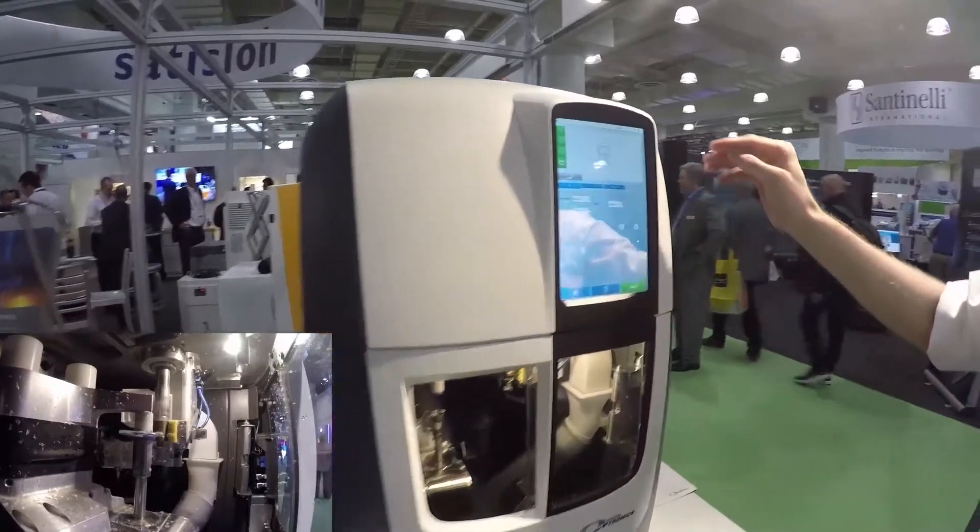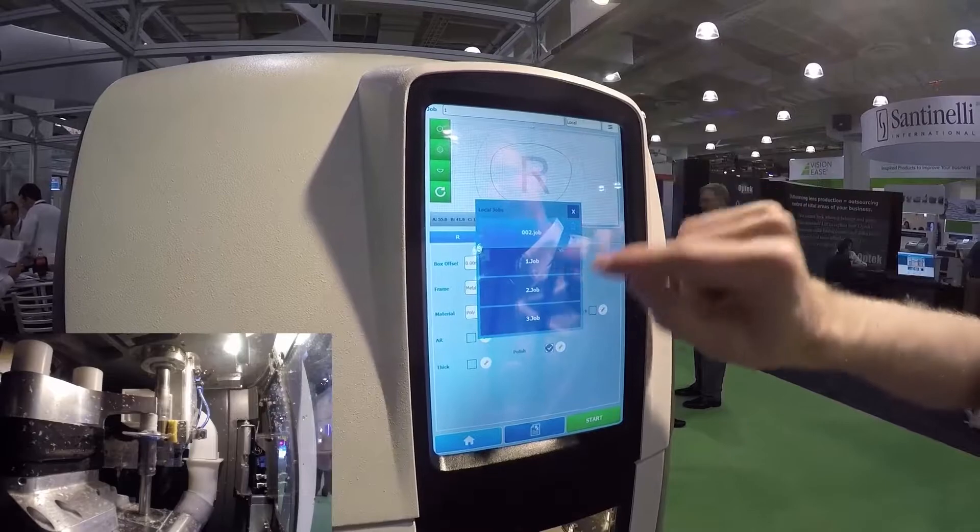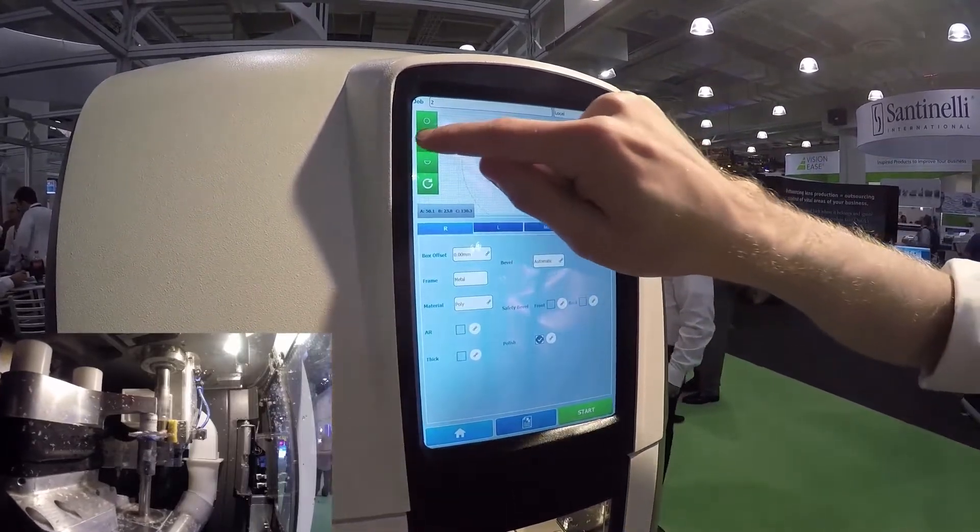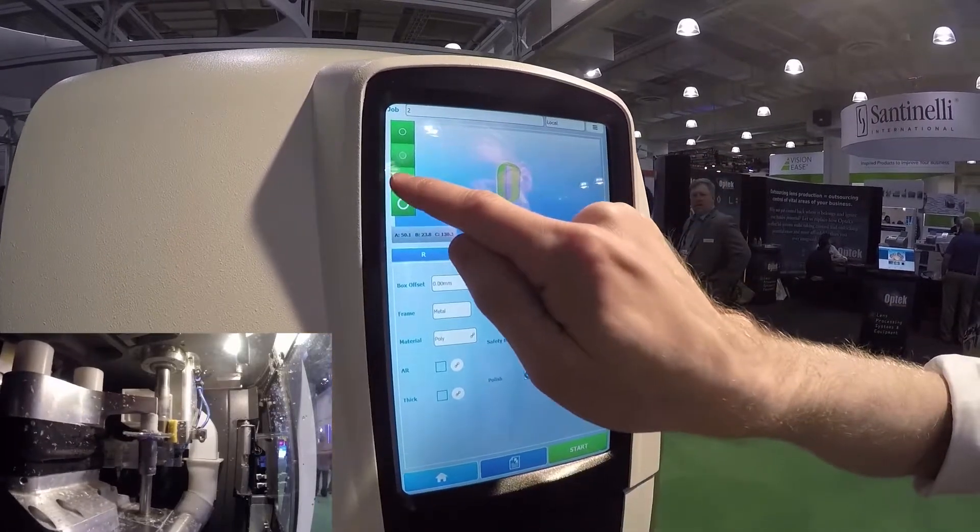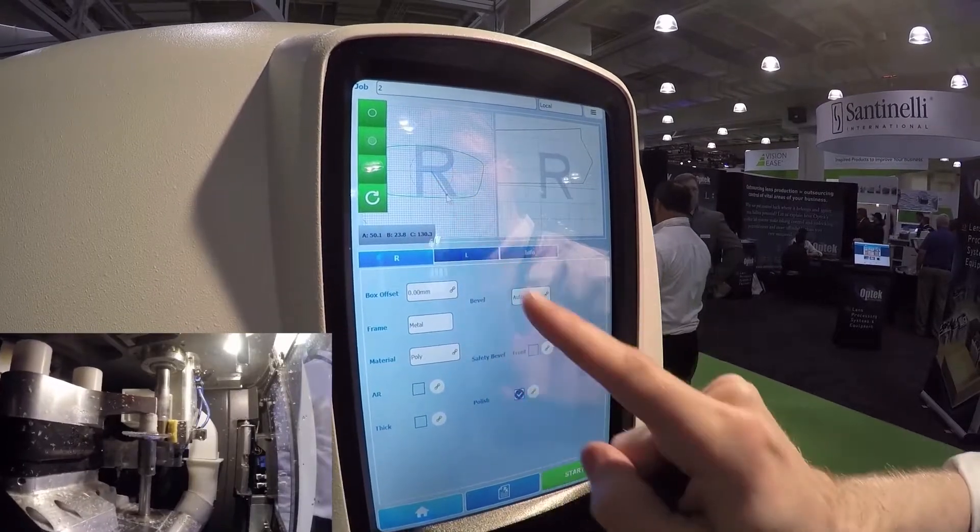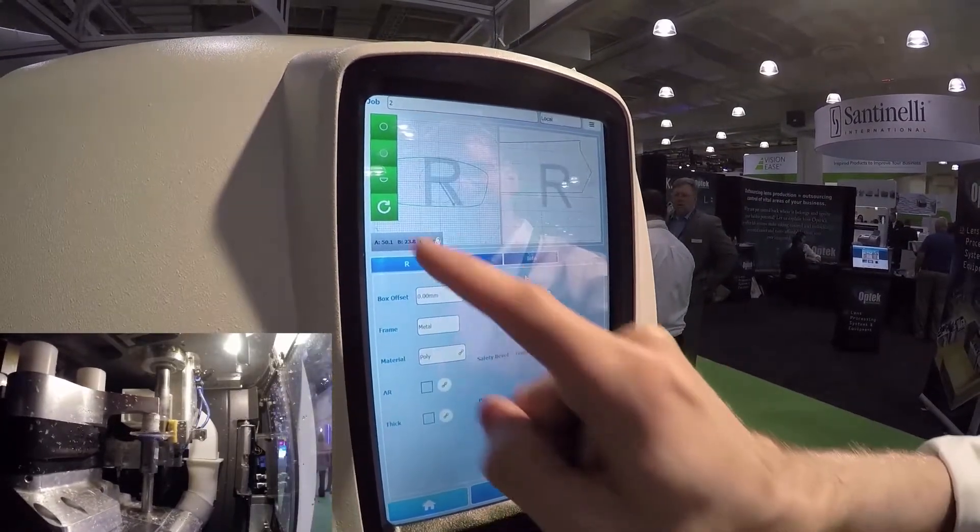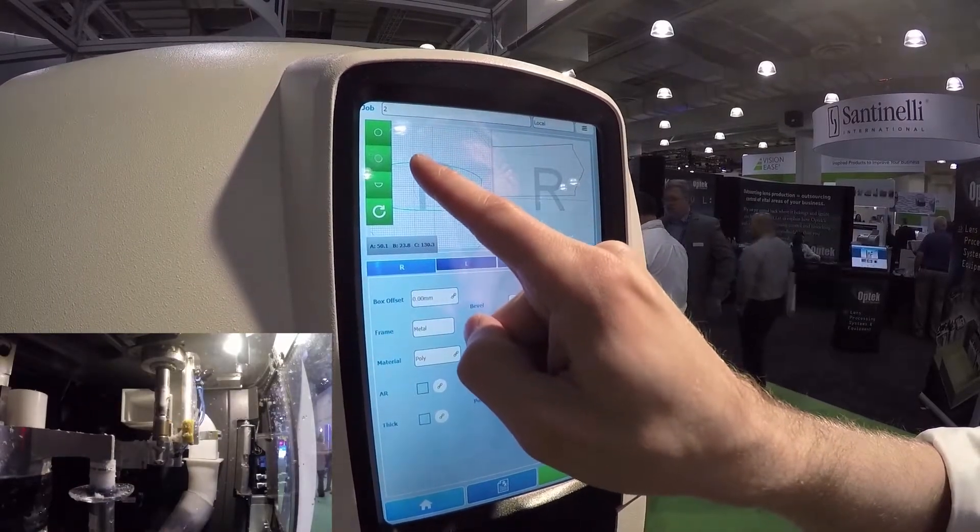We've modernized our interface. So we have a touch screen interface for job selection, allowing us to do a 3D preview of a beveled lens or a section preview to see what the bevel placement looks all the way around the lens. Preview different bevel placements to find the one that's just right for your job.